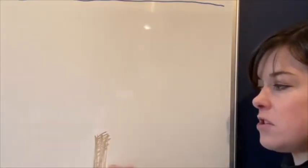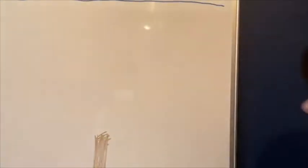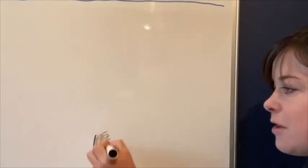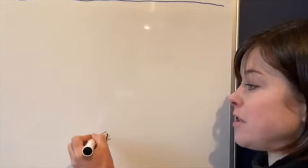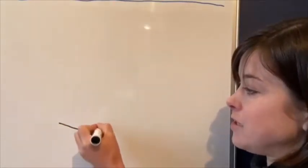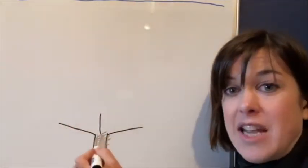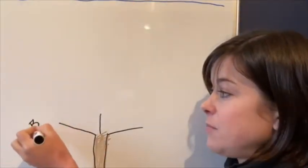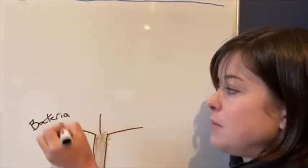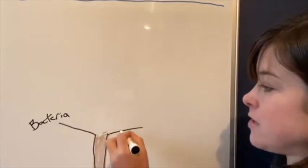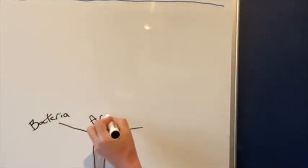This is what we call an evolutionary tree that we're about to draw. This one tiny little thing pops up three and a half billion years ago and then things start to branch off. There are three main branches. One of them changes and evolves to be bacteria, which we'll look at in storytime. And then another branch branches off into something called Archaea.